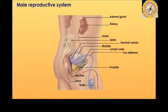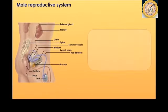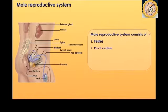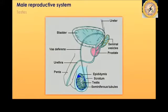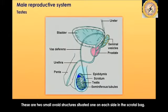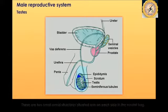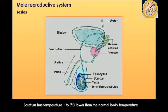Now focusing on the male reproductive system. It basically consists of the testes, duct system, accessory glands, and copulatory organs. The testes are two small ovoid structures situated one on each side in the scrotal bag. The scrotum has a temperature one to three degrees Celsius lower than the normal body temperature.